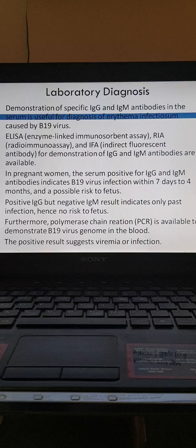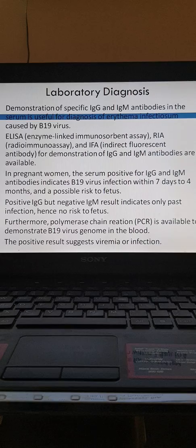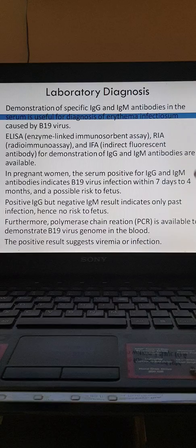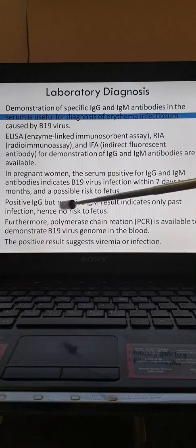For lab diagnosis, demonstration of specific antibodies — IgG and IgM — in serum is useful in diagnosing erythema infectiosum. IgG antibodies indicate past infection or past exposure, while IgM antibodies indicate recent infection. ELISA and indirect fluorescent antibody tests can be performed. In pregnant women, if serum is positive for both IgG and IgM, this indicates B19 virus infection within seven days to four months and there is a possible risk to the fetus. If positive for IgG only but negative for IgM, this indicates only past infection with no risk to the fetus.